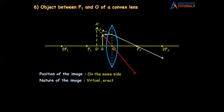Look at the size of the object and now look at the size of the image — the image is big. And that's why the image is magnified. So the nature of the image is virtual, erect, and magnified. This is the ray diagram where we get this kind of image.